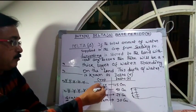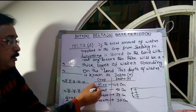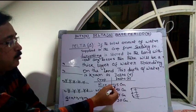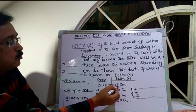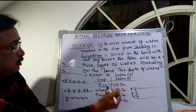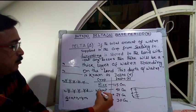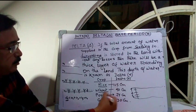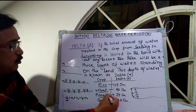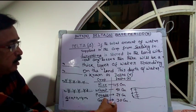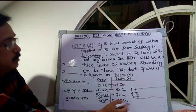Delta values for various crops: for rice, delta is 125 cm; for wheat, 40 cm; for potato, 75 cm; and for gram, 30 cm.